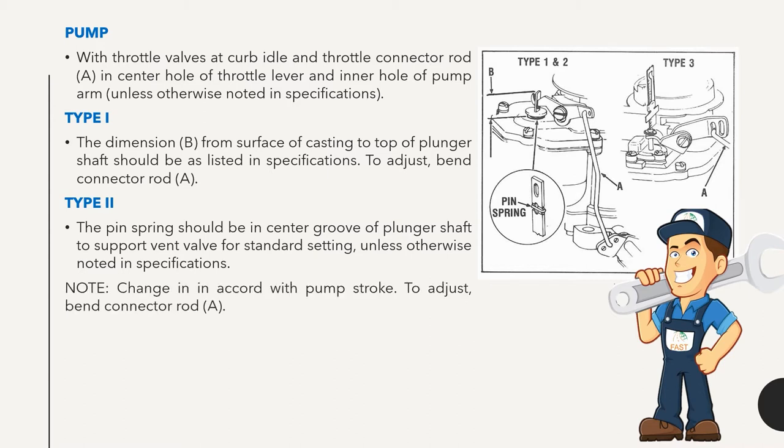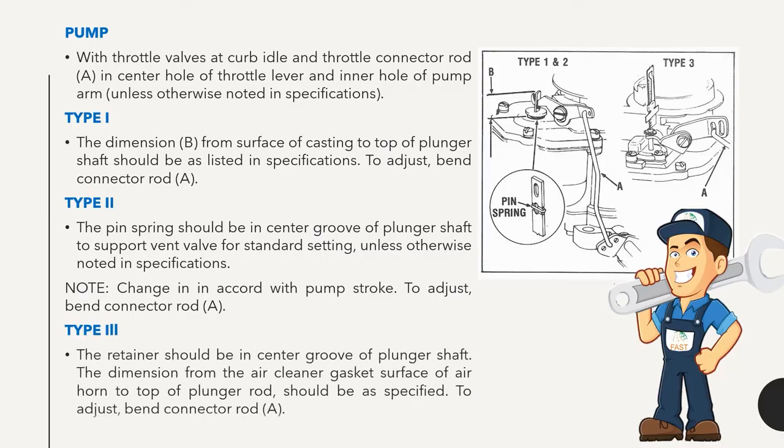Type L pump: The retainer should be in center groove of plunger shaft. The dimension from the air cleaner gasket surface of air horn to top of plunger rod should be as specified. To adjust, bend connector rod A.